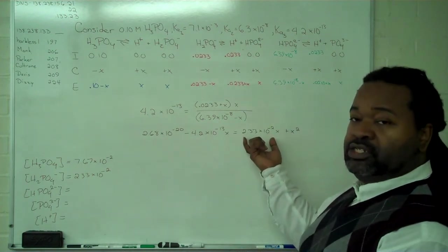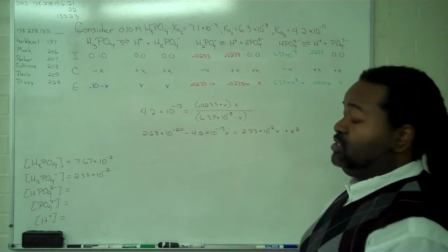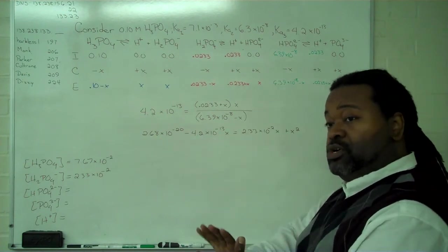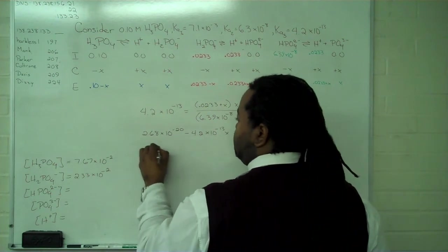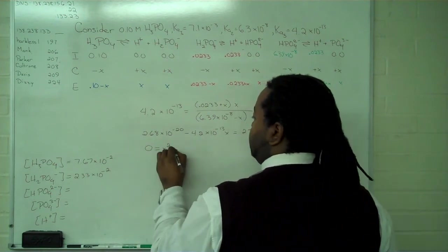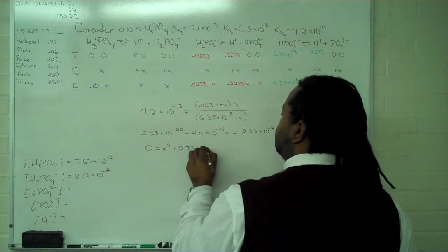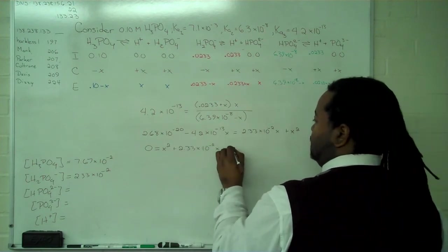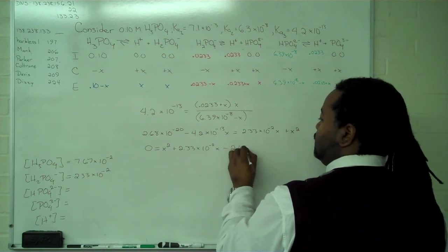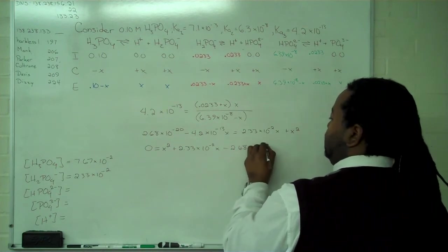Our linear term will be entirely due to this one because 10 to the minus 13 is extremely small in comparison. So we're writing a proper quadratic: x squared plus 2.33 times 10 to the negative 2x minus 2.68 times 10 to the minus 20.